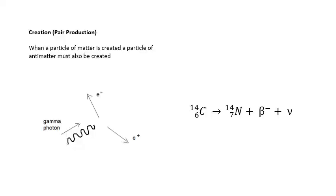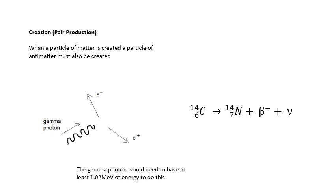There's another event that we need to know about, which is the opposite of annihilation, and that's creation — pair production. What's happening here is that a gamma photon interacts with something and creates a particle and an antiparticle — a pair of particles. In this case, an electron and a positron. This gamma photon would need to have at least 1.02 MeV of energy to do this. We also talked about carbon-14 producing a beta minus, an electron, and an antineutrino — that's another example of creation. If you create a particle, you have to create an antiparticle.